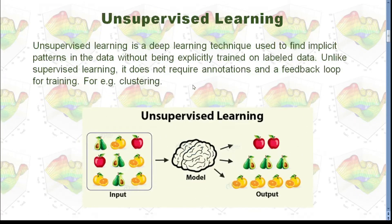And then we have unsupervised learning. That means we have all different kinds of data and we don't know their name — we don't have labels for them. And we are using all those data to feed our model.